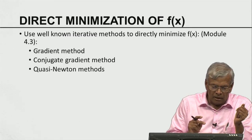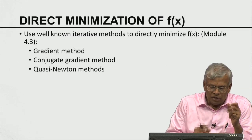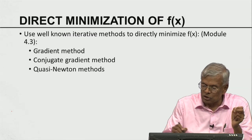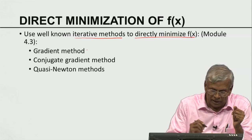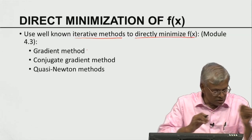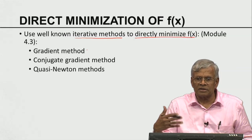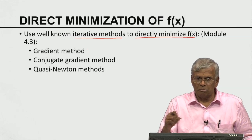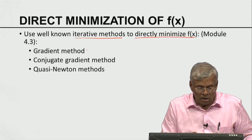The alternate method would be, instead of solving the gradient-equal-to-zero linear equation, to directly minimize F(x) — the sum of squared residuals — using iterative methods. Some well-known methods for iterative minimization are gradient methods, conjugate gradient methods, and quasi-Newton methods. We will provide an overview of these methods, which are an integral part of the data assimilation process and must be programmed to bring mathematical formulations into the computational domain.